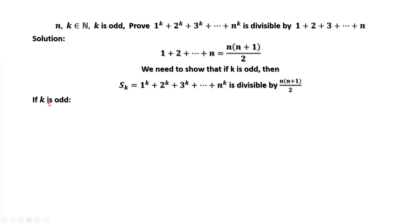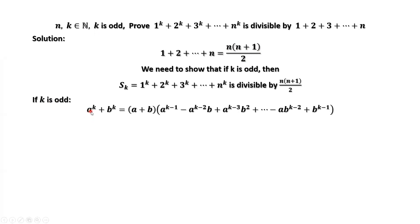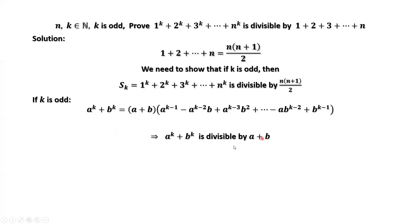From the given condition, k is an odd number. If k is an odd number, we have the following result: a to the power of k plus b to the power of k equals (a + b) times (a^(k-1) − a^(k-2)·b + ... + b^(k-1)). This means a^k + b^k is divisible by (a + b), because (a + b) is a factor of a^k + b^k. This is an important result we are going to use to complete our proof.